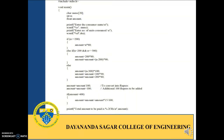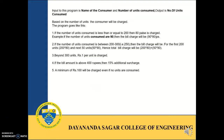The concept: the input to this program is the consumer name and the number of units consumed by that particular consumer. The output of this program is the bill generated based on the number of units consumed. Since this is a conditional branching statement program, it involves a number of conditions.